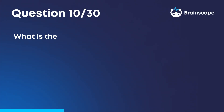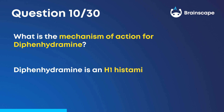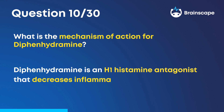Question 10. What is the mechanism of action for diphenhydramine? Diphenhydramine is an H1 histamine antagonist that decreases inflammatory response.